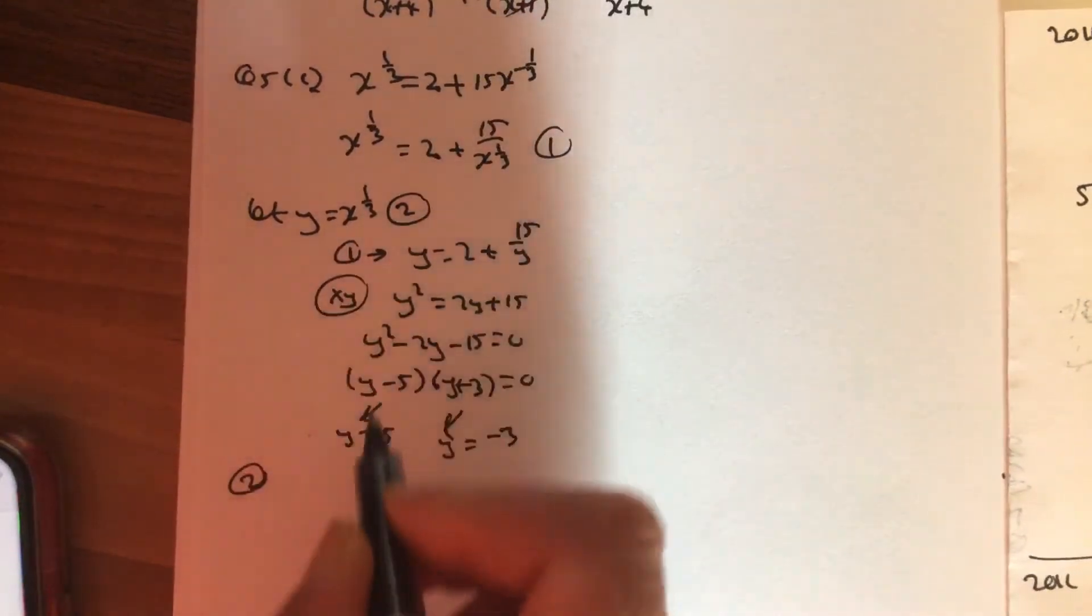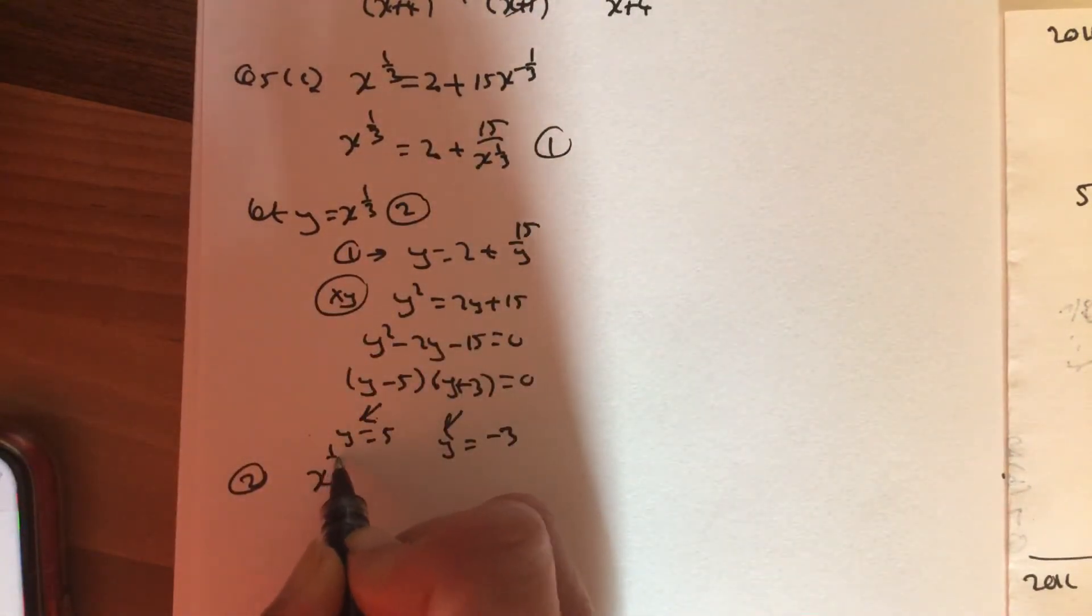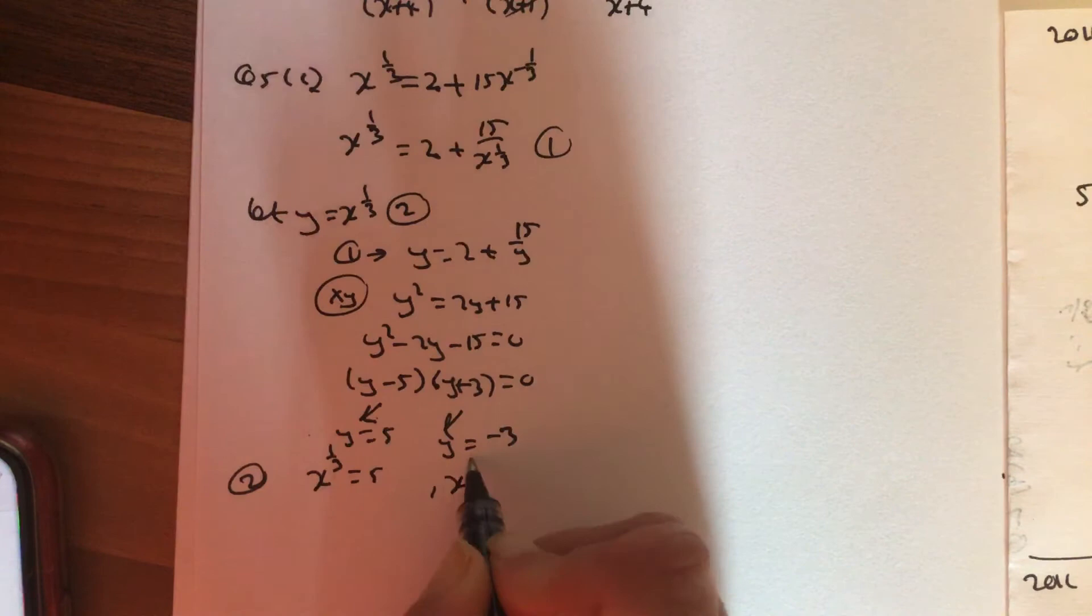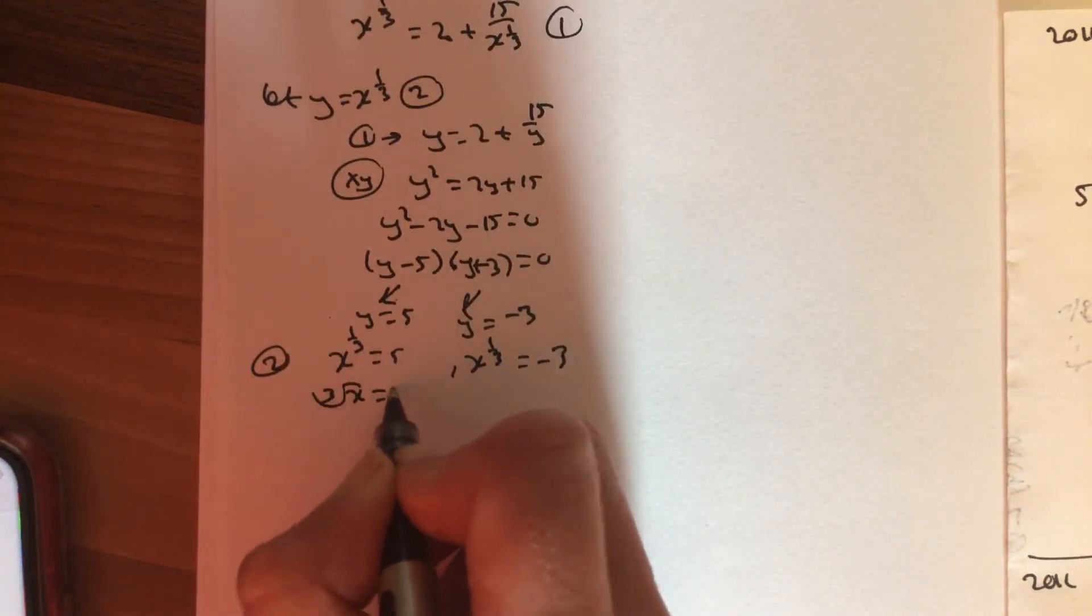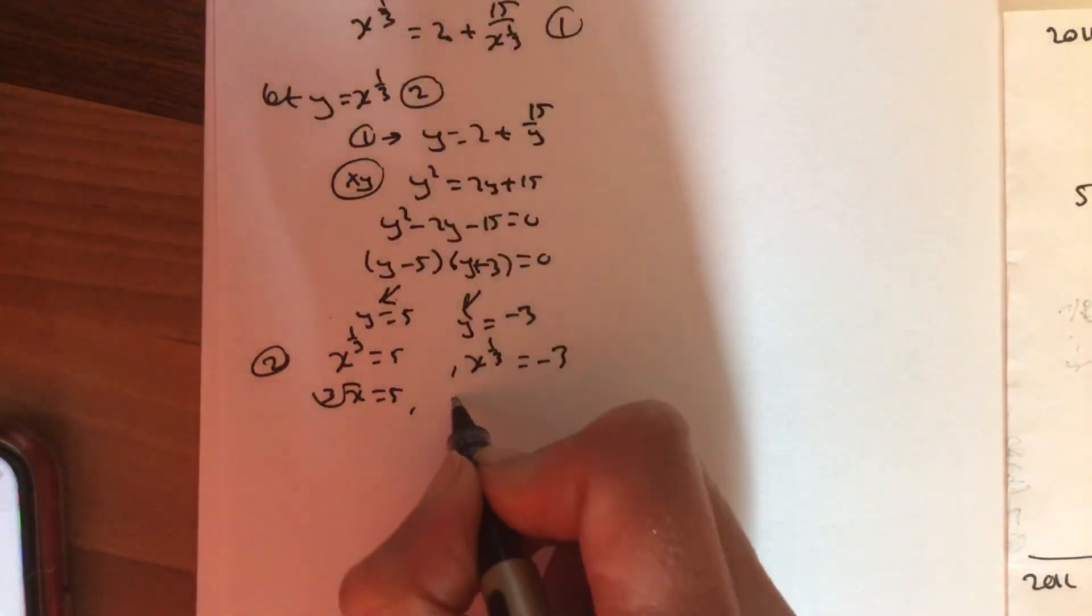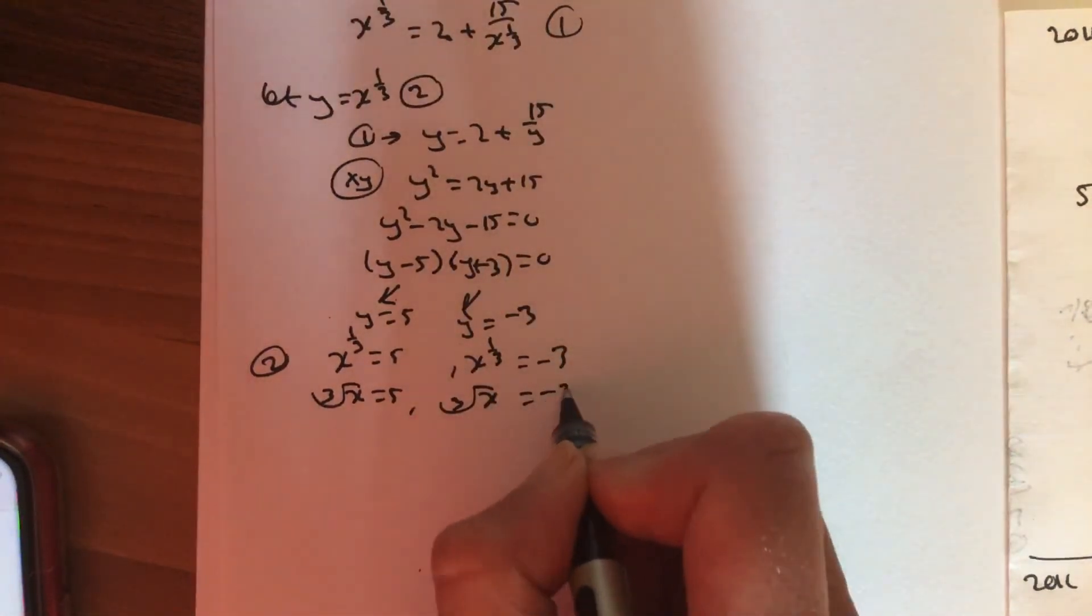Equation 2 tells me that y is actually x to the one-third. So x to the one-third is 5, x to the one-third is minus 3. Remember what x to the one-third means is the cube root of x. So the cube root of x are these numbers.